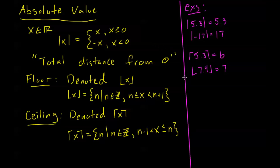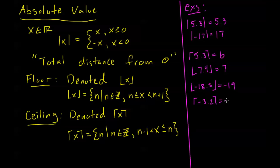Floor and ceiling get a little bit tricky when we get into negative numbers. If I have the floor of negative 18.3, the floor is defined to be the integer that's less than or equal to negative 18.3. With negative numbers, that means I'm going more negative — going to the left on a number line — so the floor is going to be negative 19. Now the ceiling is exactly the opposite. If I have the ceiling of negative 3.2, that means it's the next integer increased from negative 3.2 — going to the right on the number line, getting less negative — so that's just going to be negative 3. With positive numbers, the floor is just the integer part, whereas with negative numbers, the ceiling is the integer part.